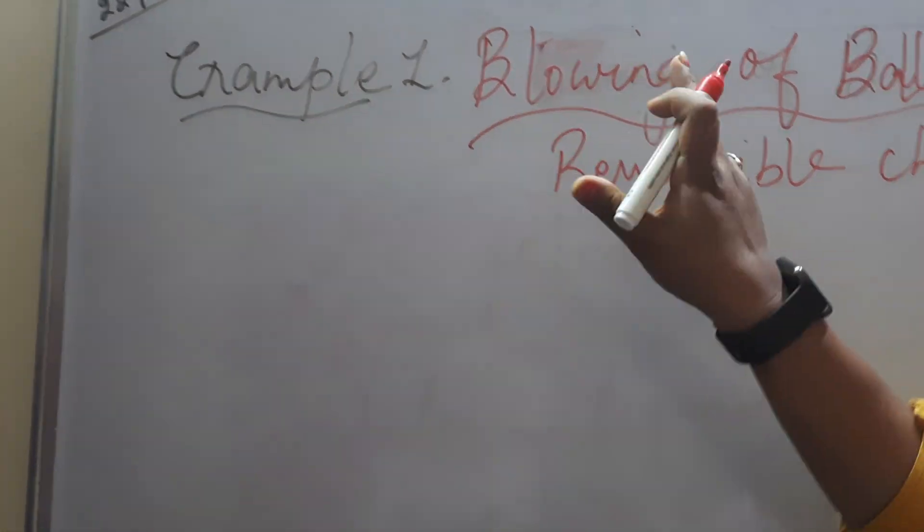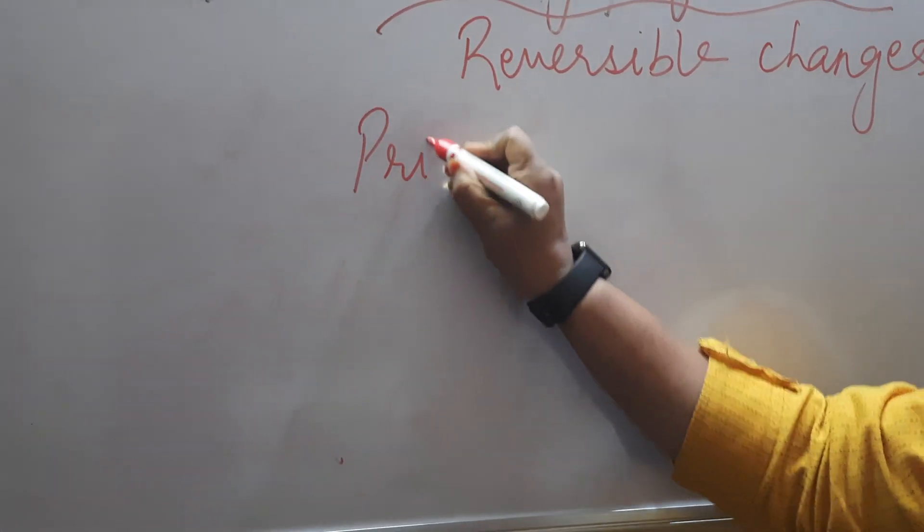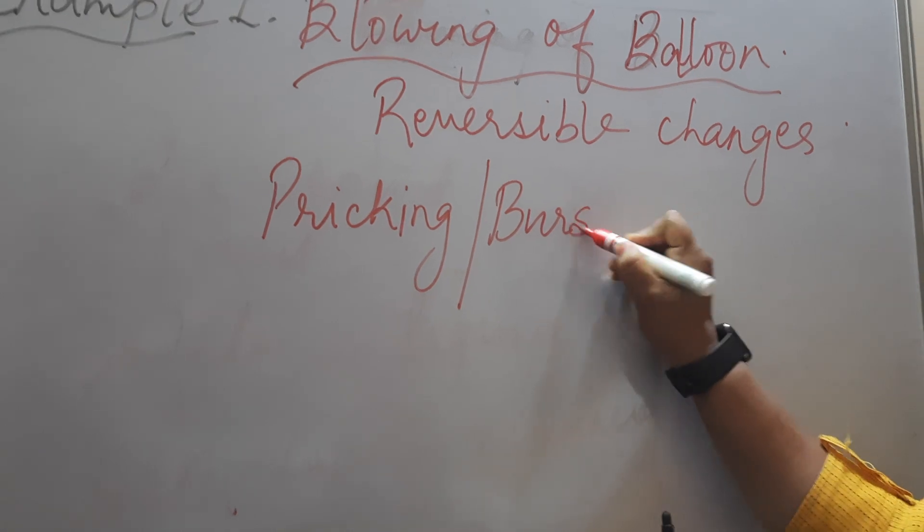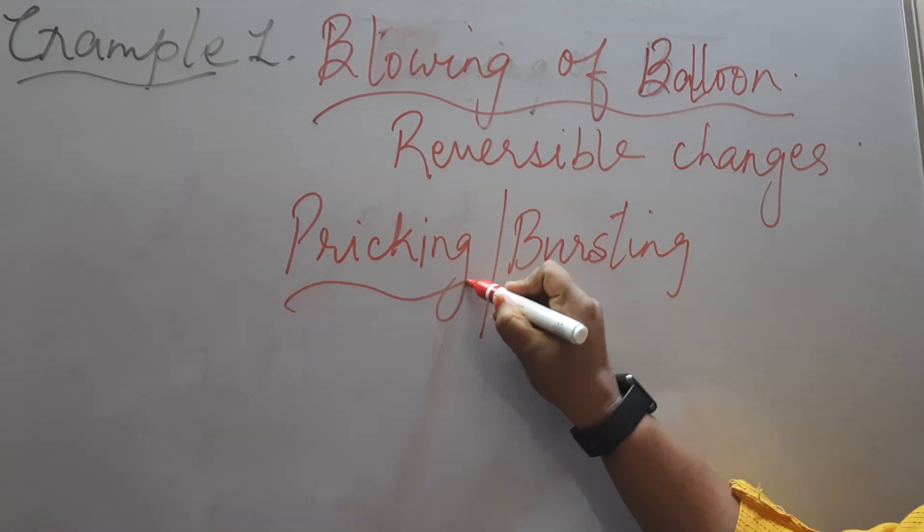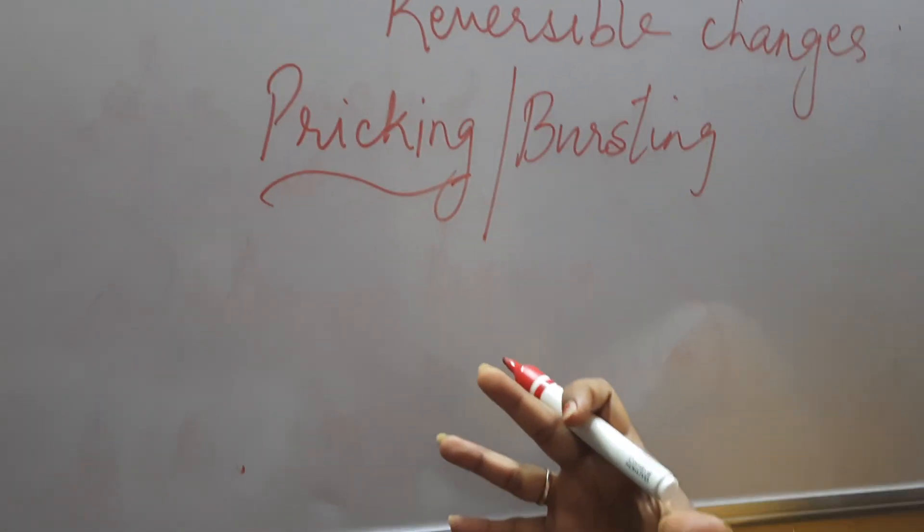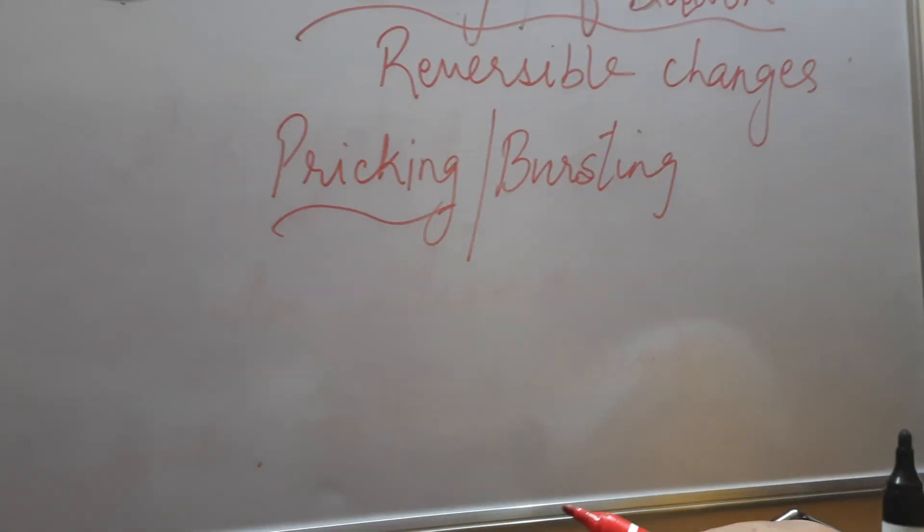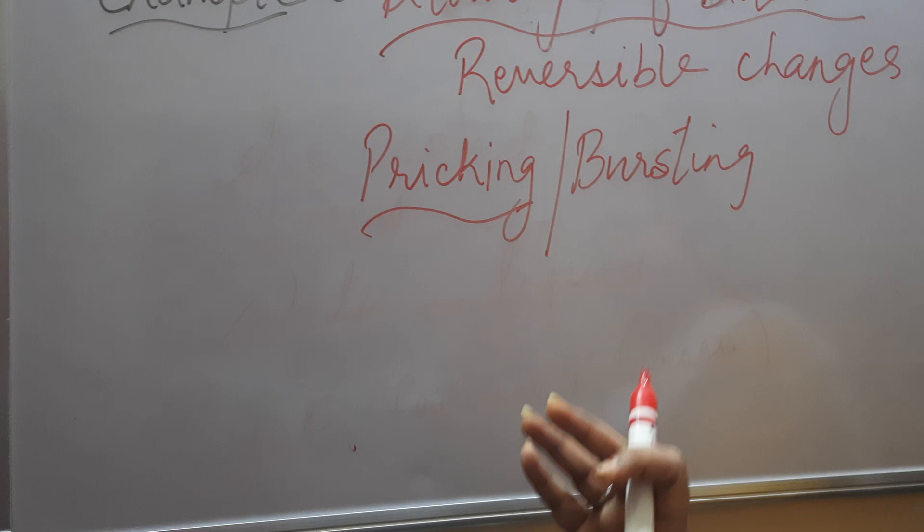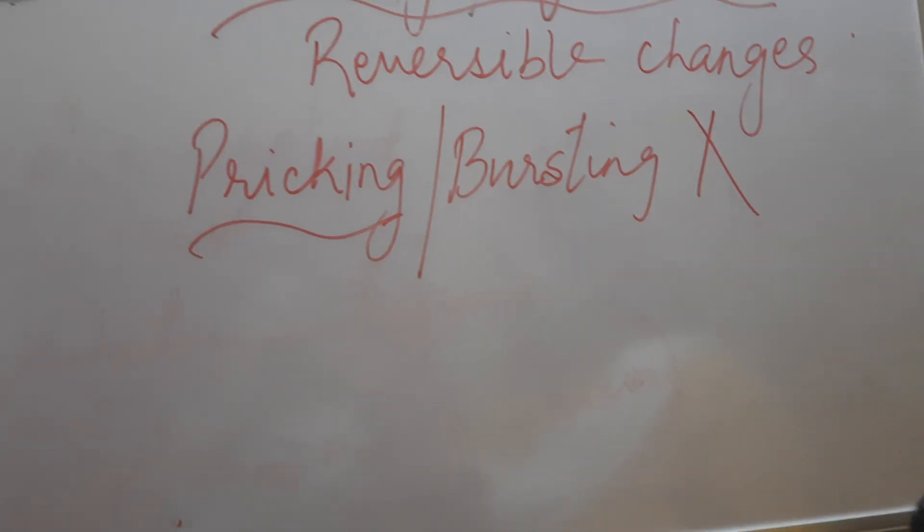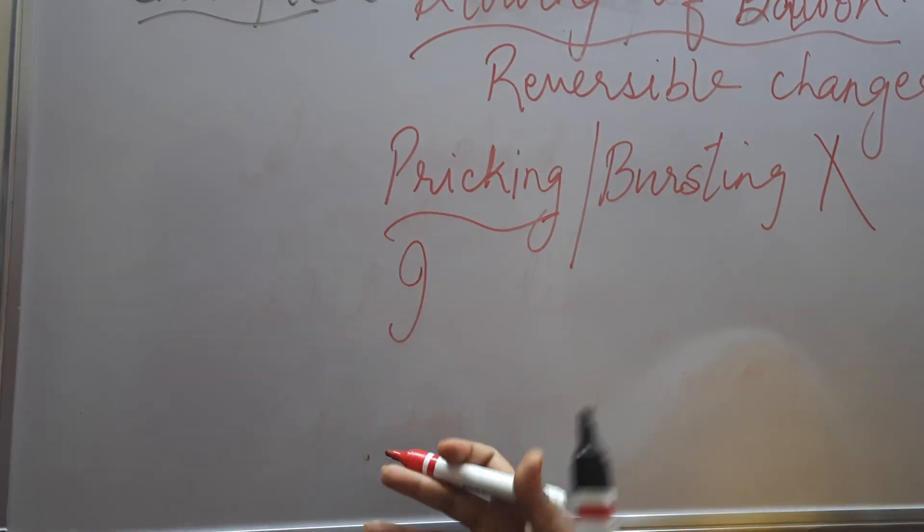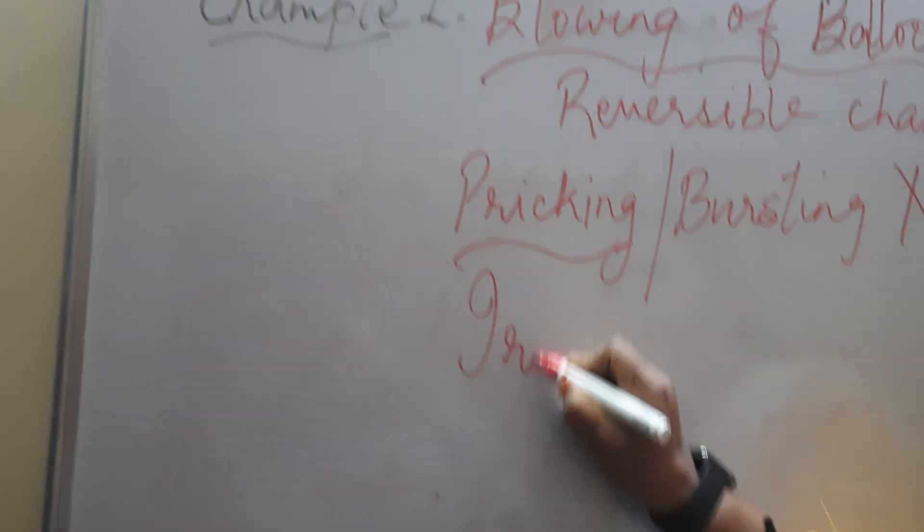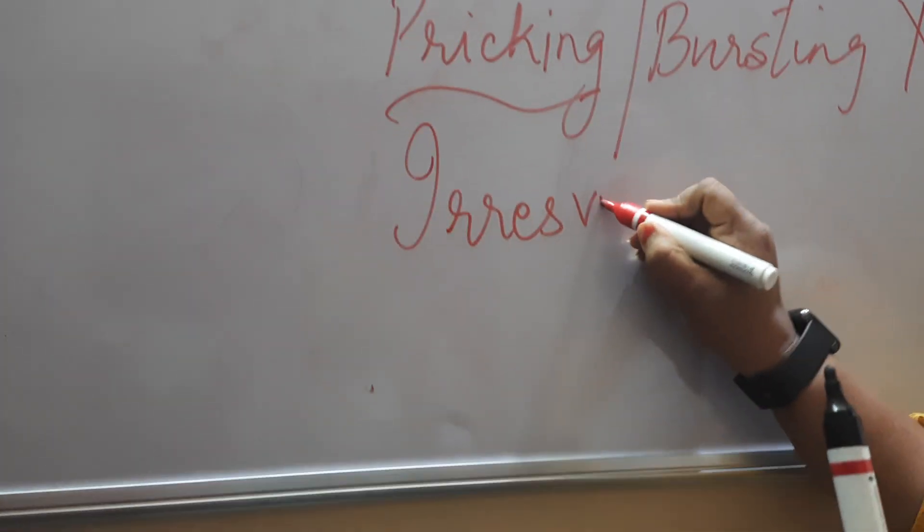Now, same example ko blowing ke jaghe agar mani likhha pricking. Prick means chubhana. Pricking or bursting, phorana. Whatever you want to do. Prick karo means chubhao. Fula hua baloon ko. Or burst karo. Same. Fula hua baloon ko. Now, if I want the same original shape which I have started after pricking and bursting, it is not possible. So this type of change, when you cannot get into its original position, shape, size, that type of change is known as irreversible changes.